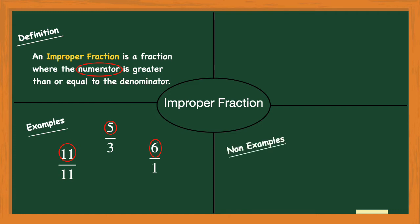Now let's take a look at some non-examples. Our first non-example is one-ninth. The numerator is less than the denominator of nine, so this is not an improper fraction. When I look at twenty-one fiftieths, the numerator of 21 is not greater than the denominator of 50, so twenty-one fiftieths would not be an improper fraction.